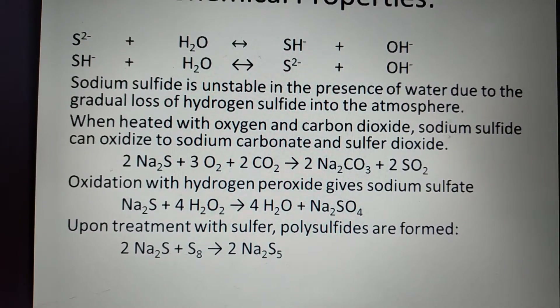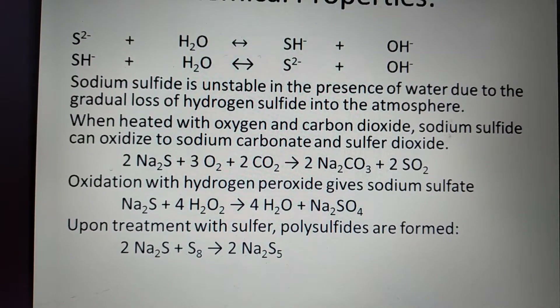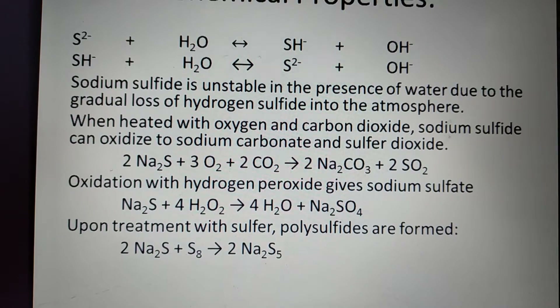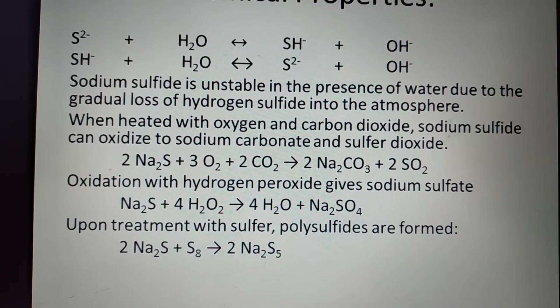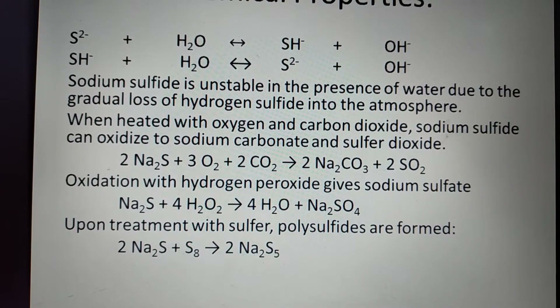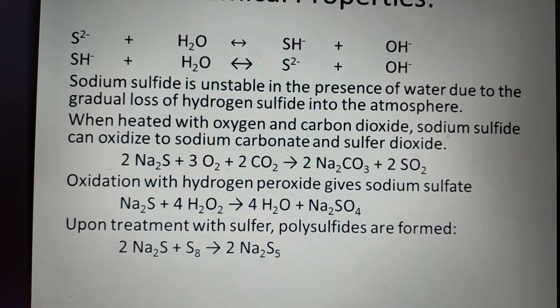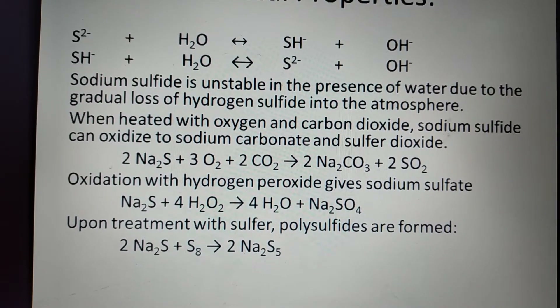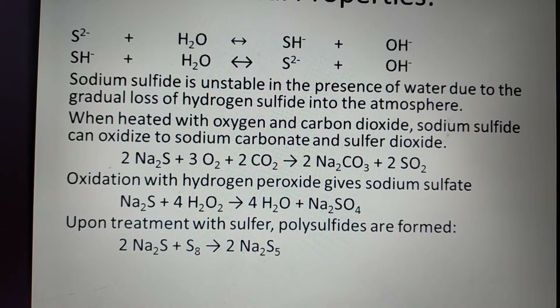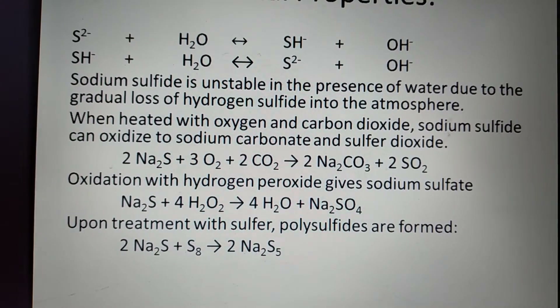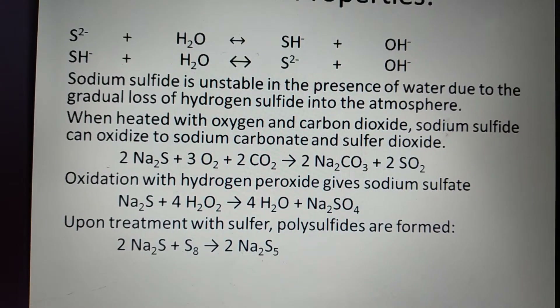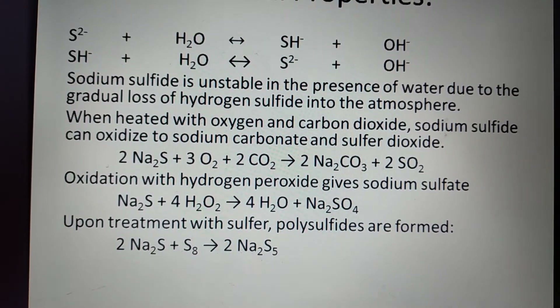Oxidation with hydrogen peroxide gives sodium sulfate: Na₂S + H₂O₂ → H₂O + Na₂SO₄. Upon treatment with sulfur, polysulfides are formed.